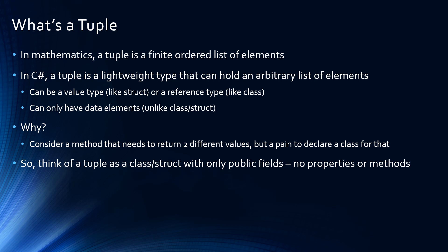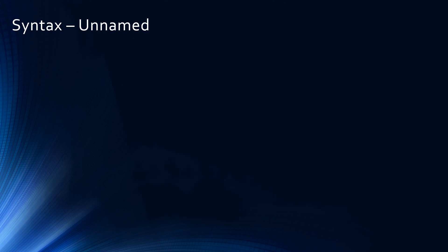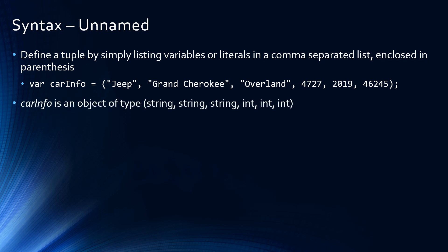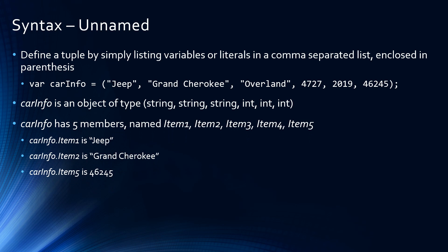So how do I create a tuple? Well, let's start with the unnamed tuple. This is the simplest. We just define the tuple by creating a comma-separated list of objects inside parentheses, and that's it. The compiler sees this and generates a struct containing public fields. The names of the public fields will be item1, item2, item3, etc. The fields will be of type whatever the types of the parameters are.